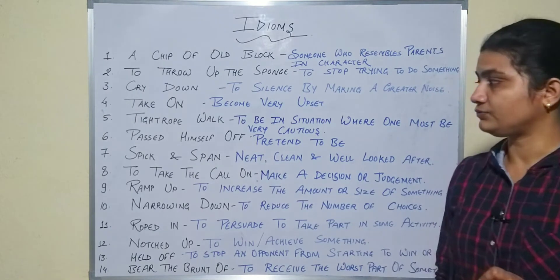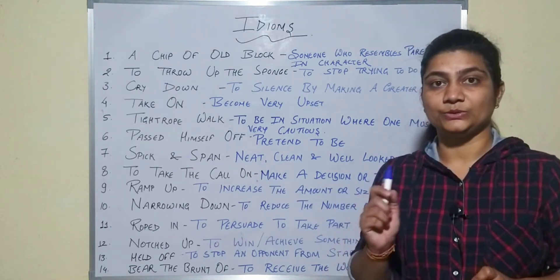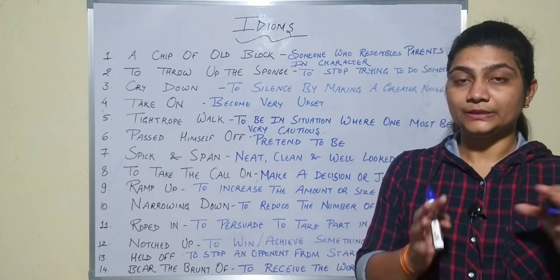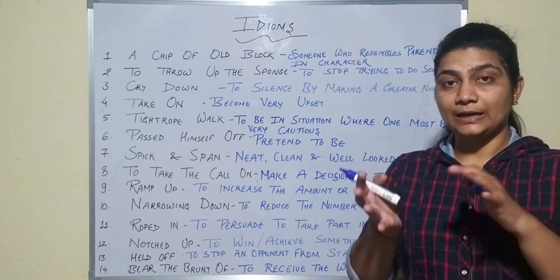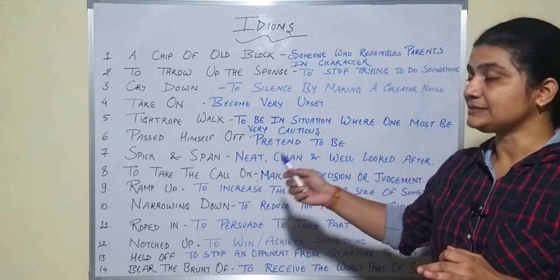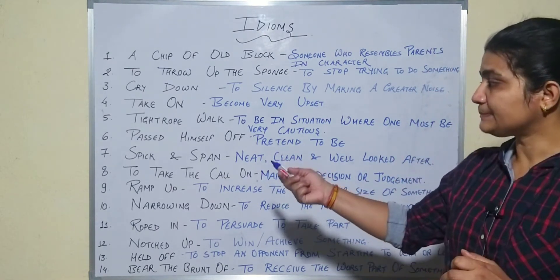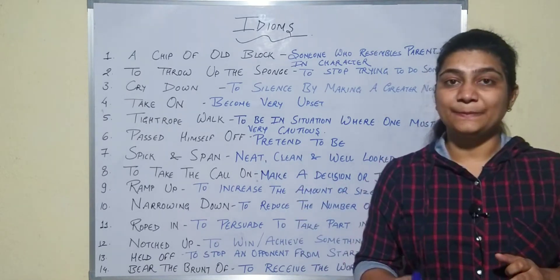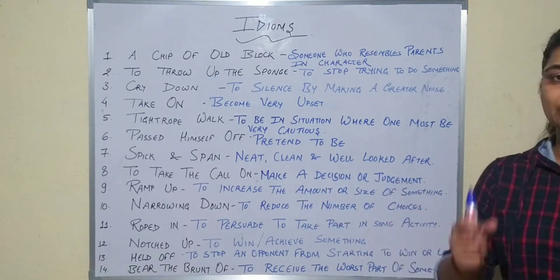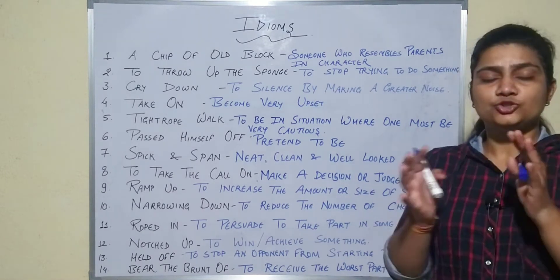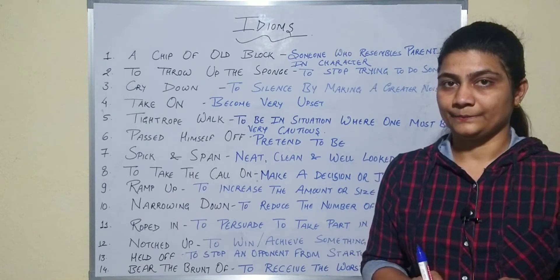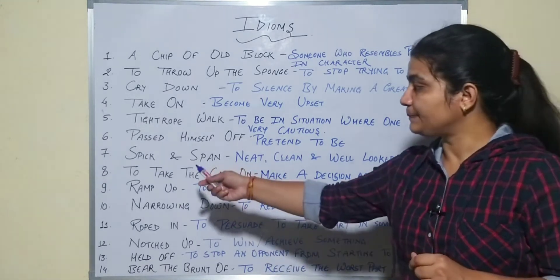'Pass himself off' — ka matlab hota hai pretend to be. Matlab originally aap kuch aur hain, aapki aadat kuch aur hai, but to show someone, to prove someone, aap kuch aur pretend karne ki koshish kar rahe hain — toh what is that situation? That is 'pass himself off.' Next, 'spick and span' — is a situation jo bahut neat hai, clean hai and well looked after. Matlab koi place, koi person ya koi bhi aisi cheez jo bahut hi neat, clean hai aur jis ki bahut acche se dekh bhaal ki gayi hai — so what you will call that? Spick and span.